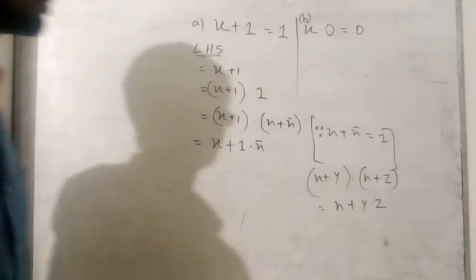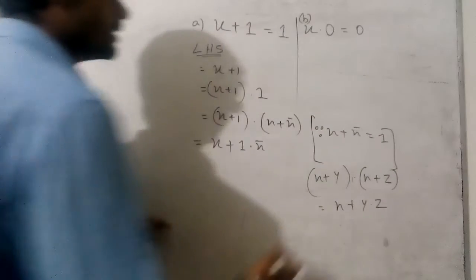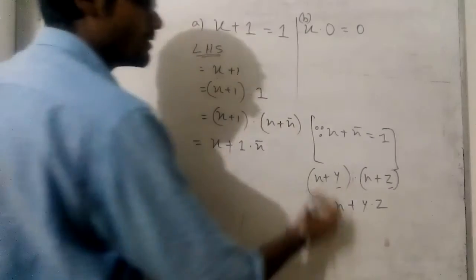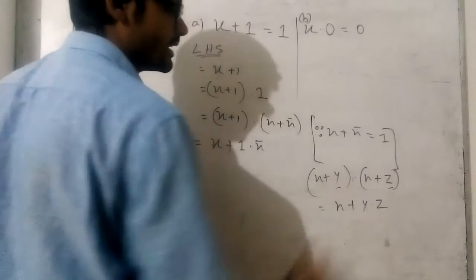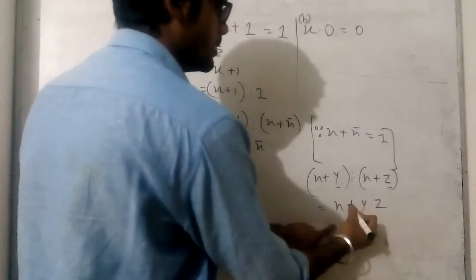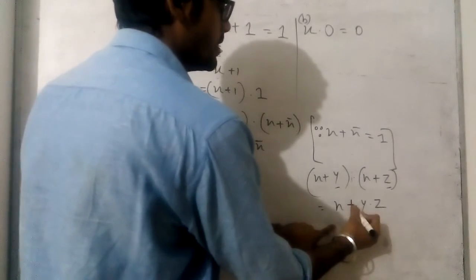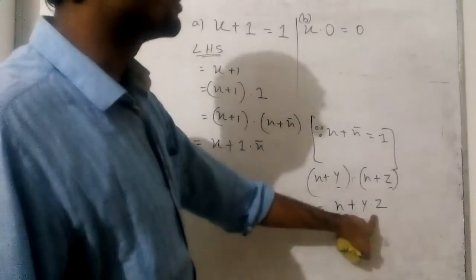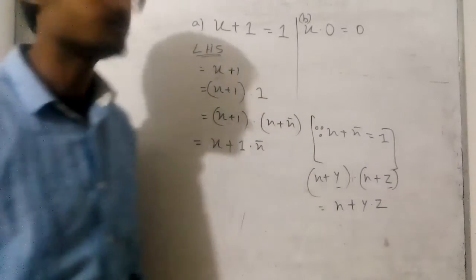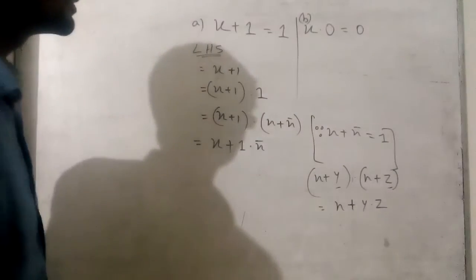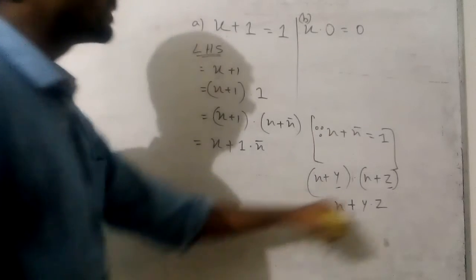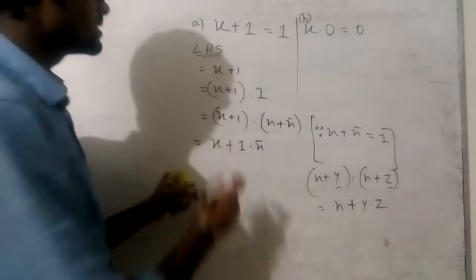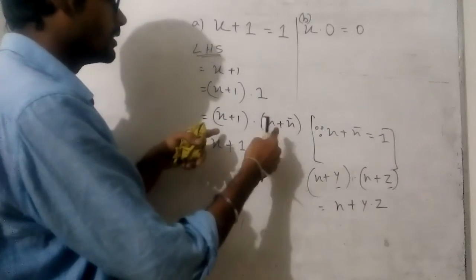So from here, these two are different from x, so we can take common x, and after the plus value we can write y into z. This is our distributive law, so by using this formula we can write x.